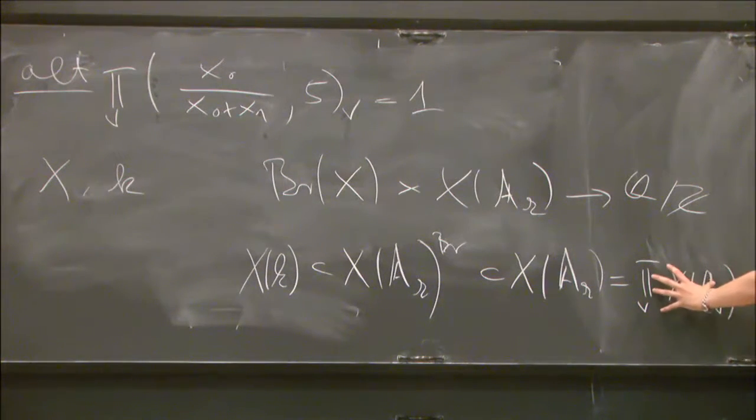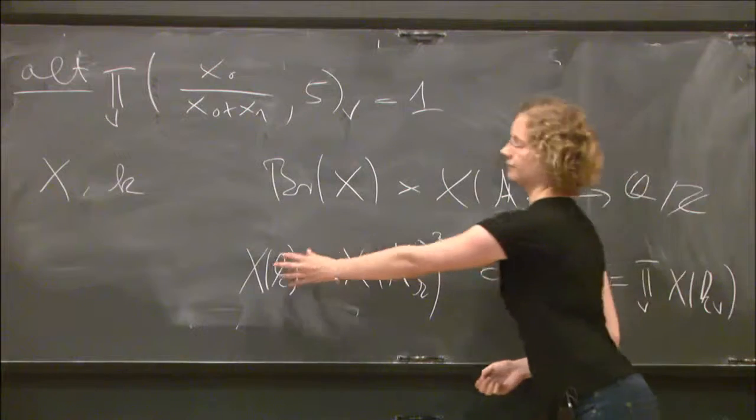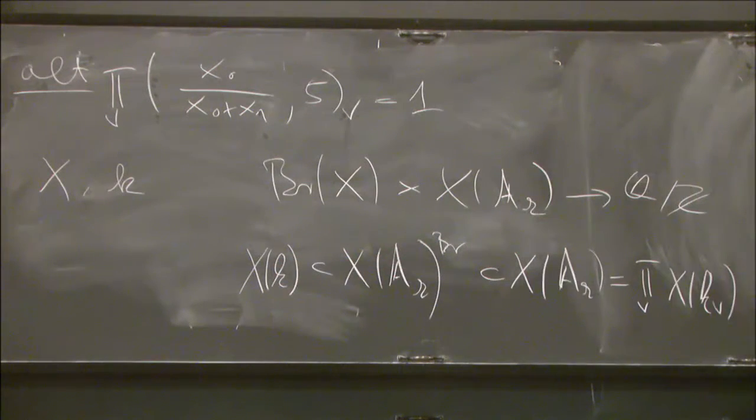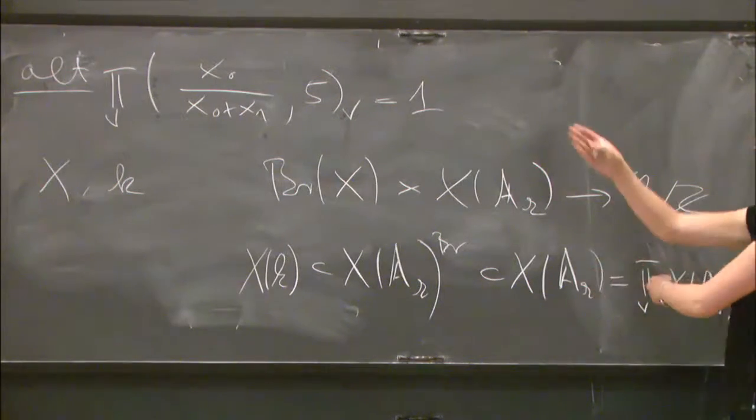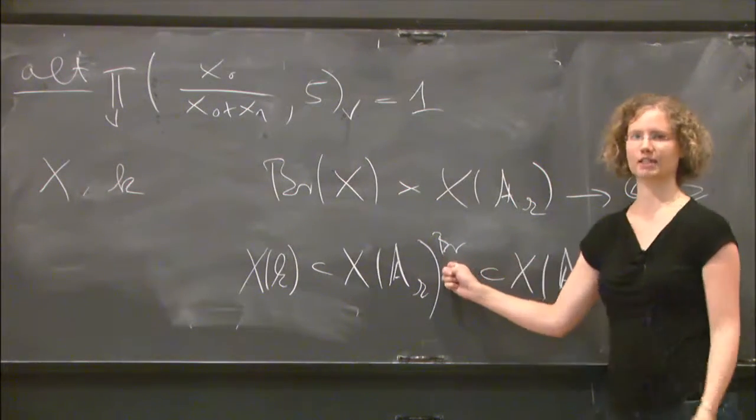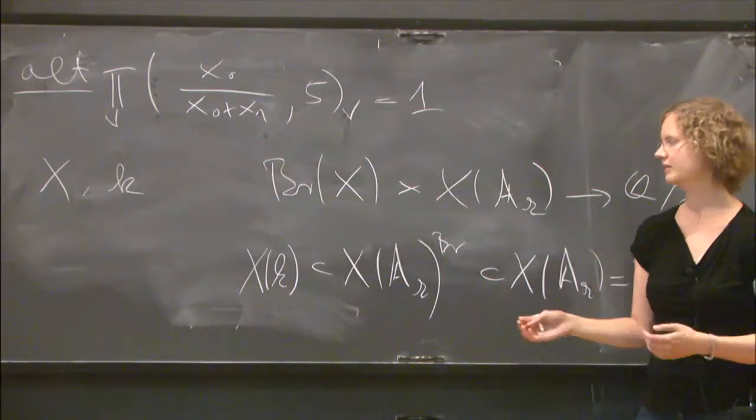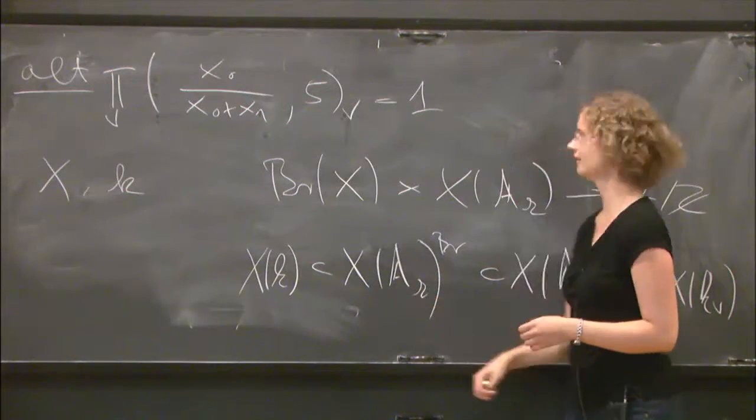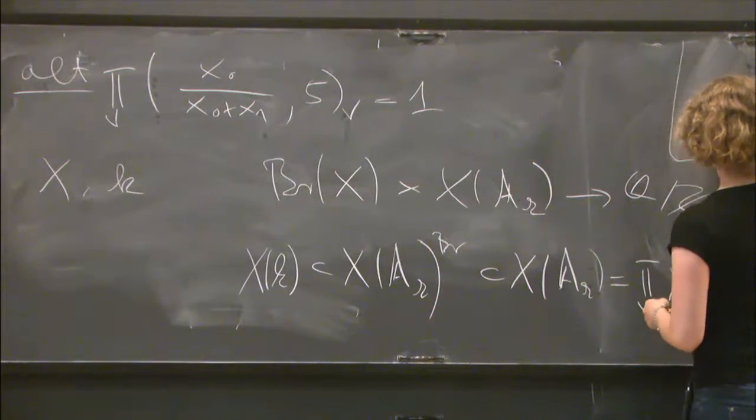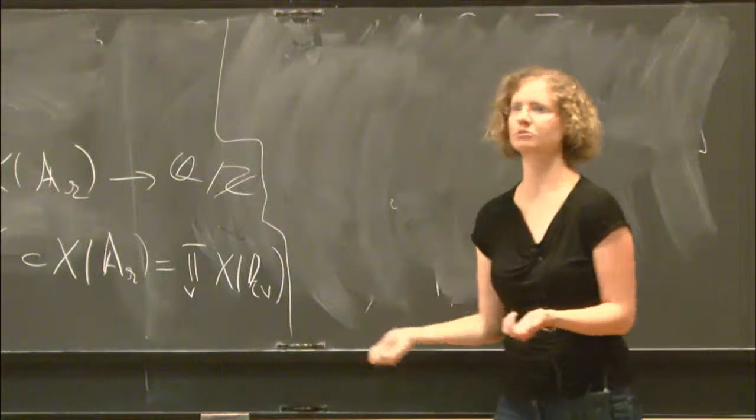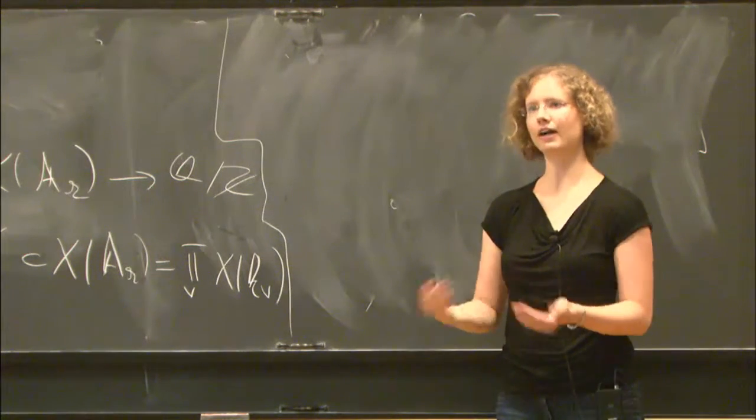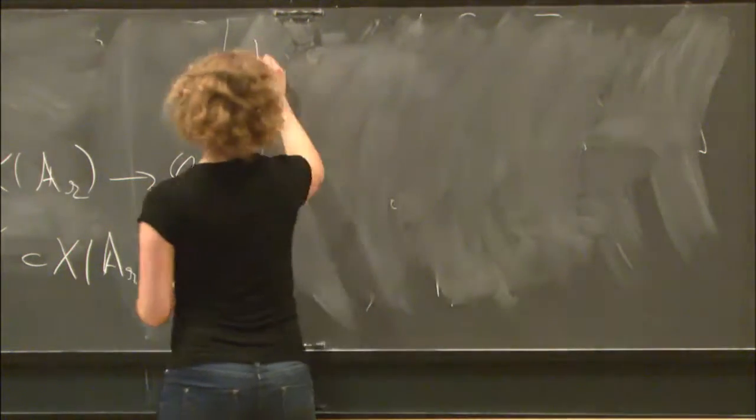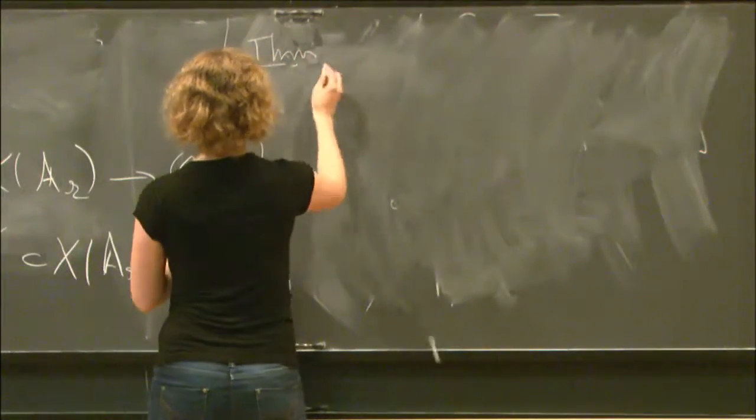The statement that if this is not empty implies that you have a rational point is known as the local global principle or the Hasse principle. It can happen that you have local points everywhere in this example, but that the Brauer-Manin set is empty. Then we have to say that we have a Brauer-Manin obstruction to the Hasse principle. So in some sense, Brauer-Manin obstruction or Brauer groups can be used to find classes of varieties which violate the Hasse principle. It's non-trivial to find such examples.